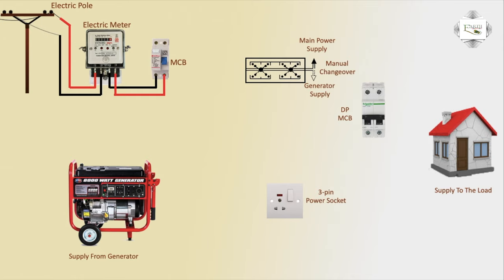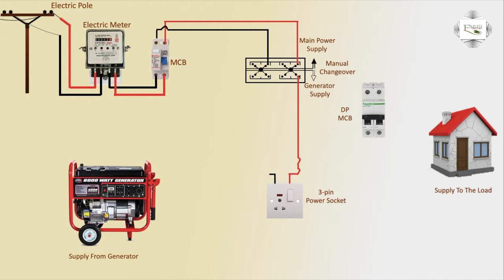DP to changeover connection: phase and neutral same connection. Generator line socket input to changeover phase line. Use the CB to switch over — connection to output, open connection to input.